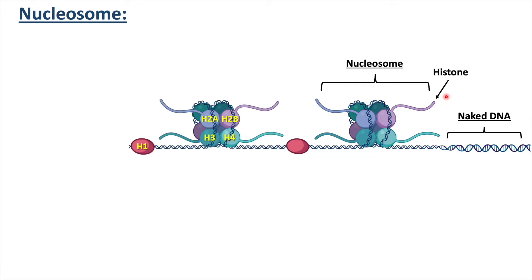Now let's talk in a little more detail about histone proteins. There are basically five classes of histone proteins: H1, H2A, H2B, H3, and H4. These histone proteins are positively charged at physiological pH because they have a high content of lysine, and they form ionic bonds with negatively charged DNA.